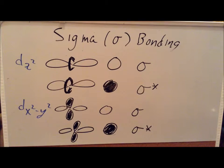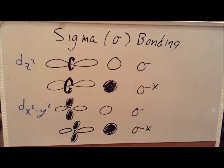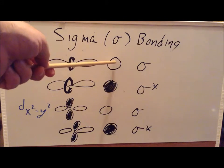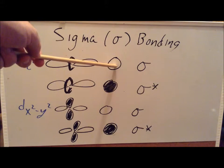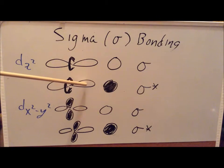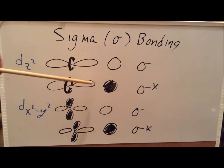We can also have sigma bonds formed between a d orbital on one atom and an s orbital on another. This type of bonding is important in transition metal complexes. If we have a dz² orbital oriented in a particular direction with an s orbital on a ligand, and the lobe and the s orbital have the same phase, that gives a sigma bonding interaction. On the other hand, if the lobe of dz² is positive phase while the s orbital is negative phase, opposite phases give us a sigma antibonding orbital.